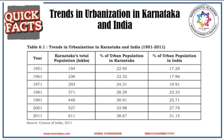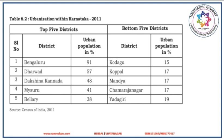This table is provided by Karnataka Economic Survey and it shows the trends in urbanization in India and Karnataka. From the table, it is evident that the percentage of urban population in Karnataka and India is gradually increasing, with the increase being more in Karnataka. According to Census of India 2011, Bengaluru is the most highly urbanized district of Karnataka, whereas Yadgiri is the least urbanized district.